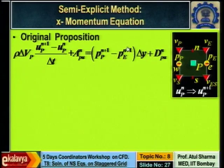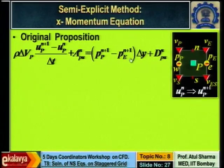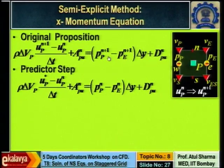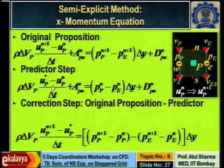If we use the correct time level for pressure, there is a starting trouble: we want to calculate velocity at the new time level, which involves pressure at the new time level, which we do not know. So we need a starter — take pressure at the old time level instead. The velocity obtained this way will not be correct; it will not obey the continuity equation. We need a velocity field that obeys both the momentum equation and mass conservation. This is why we call it the predictor step.